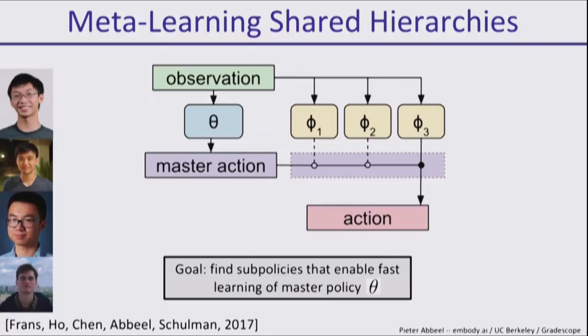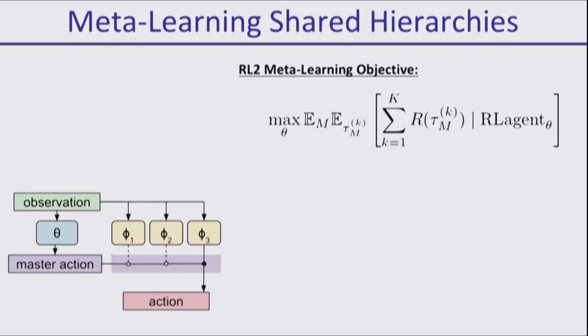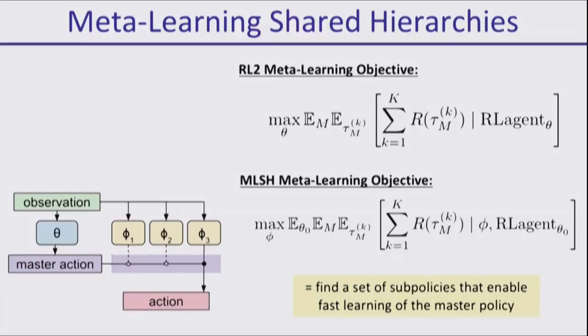If you want to do something that has extended actions over time, you could, for example, train an architecture like this where you have a master policy and then sub-policies phi1, phi2, phi3, which execute at the full control rate. The master policy switches between them. Then you can train this in the meta-learning setting. This is the original RL squared type meta-learning. What we do is find sub-policies parameterized by phi such that if a master policy is being trained by a reinforcement learning algorithm, and that master policy is initialized randomly with parameter vector theta zero, and it's randomly dropped in an environment M and gets to experience K trajectories, those sub-policies should be really good at allowing this agent to succeed.